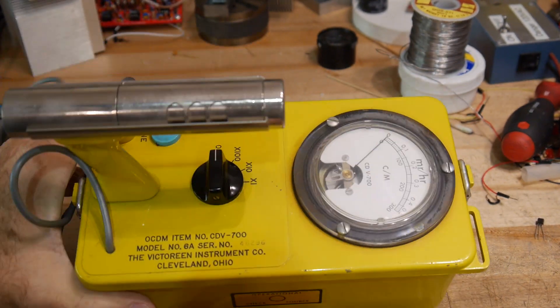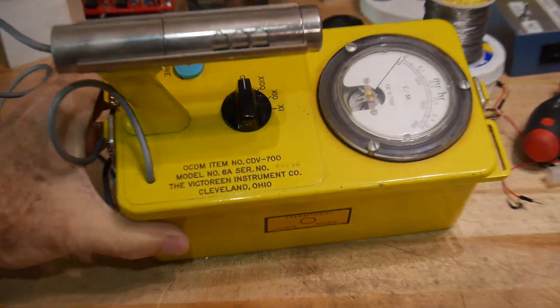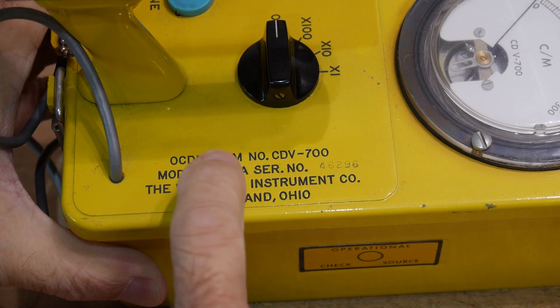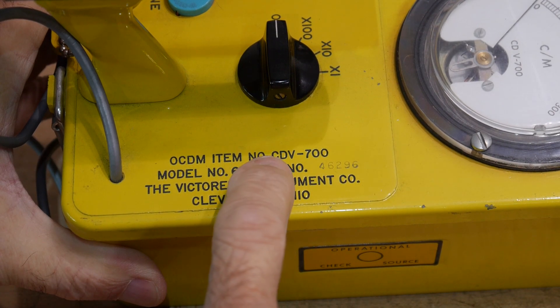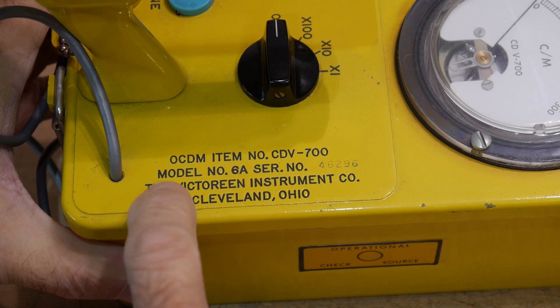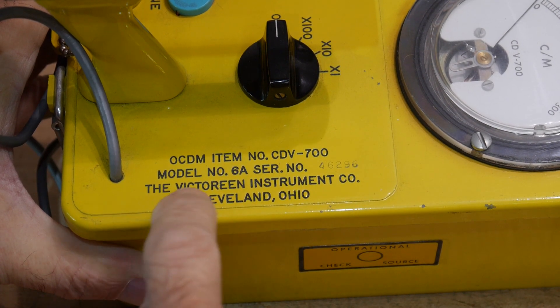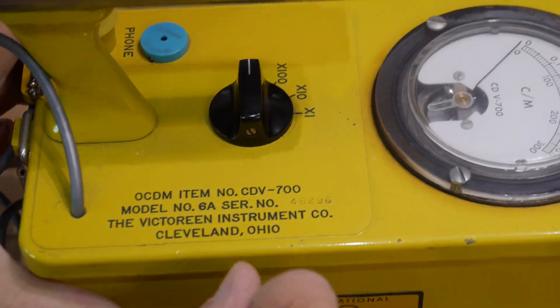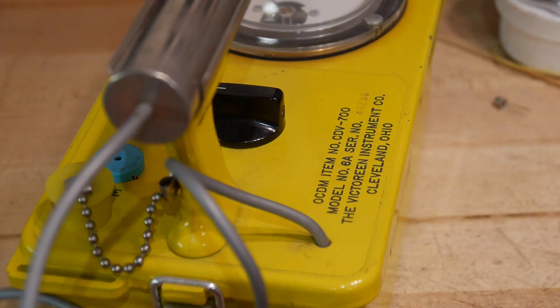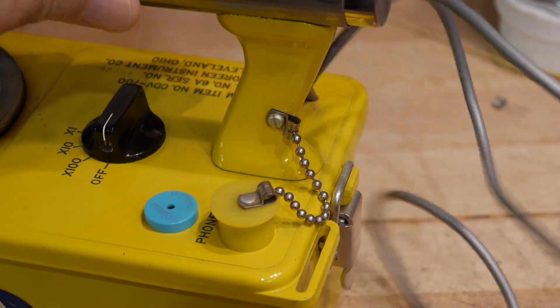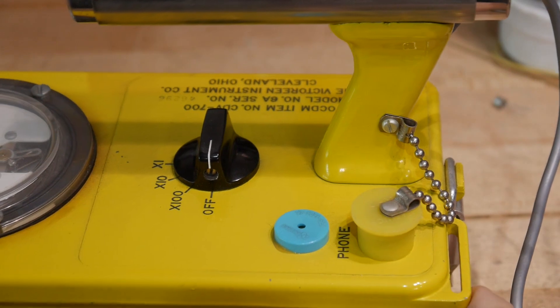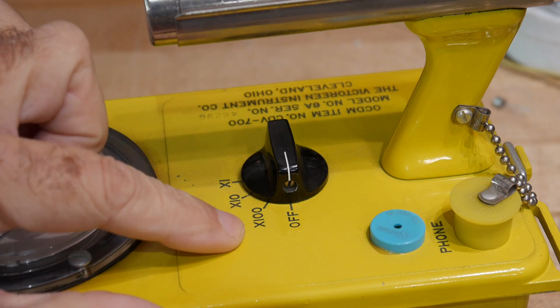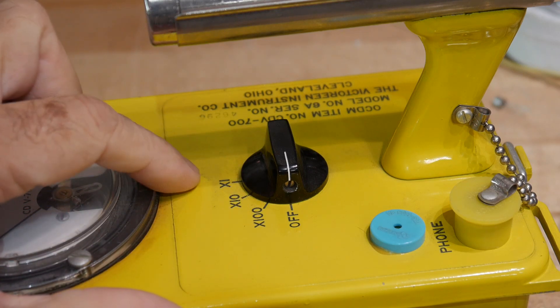And this one is the, let's zoom in. This one is OCDM item number CDV700, model number 6A, the Victorine Instrument Company, Cleveland, Ohio. And it has a Geiger tube on a leash here. It has a meter. It has various settings, times 100, times 10, times 1.